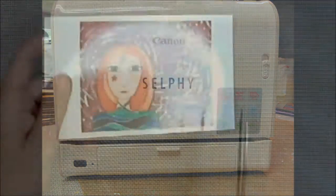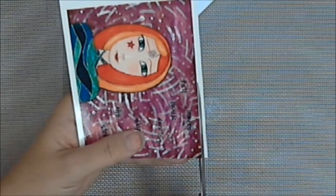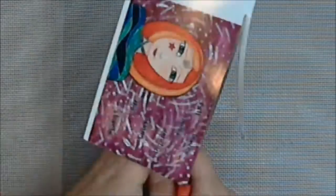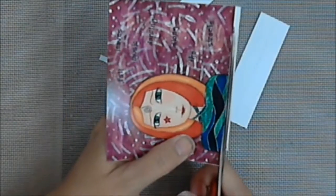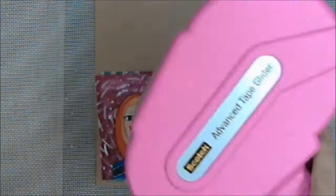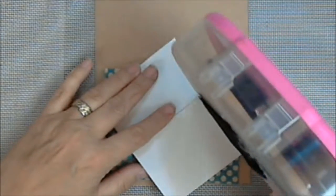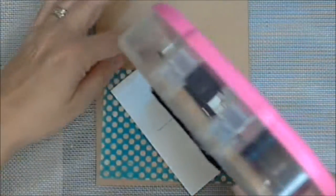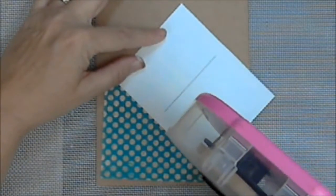There's my obscure kind of false thing. I'm not even going to read it, because it's kind of weird. I scanned my journal page, and printed it out on my Canon selfie printer, which I like, I really like it for making these kind of cards. There's the advanced tape glider, also known as an ATG gun.